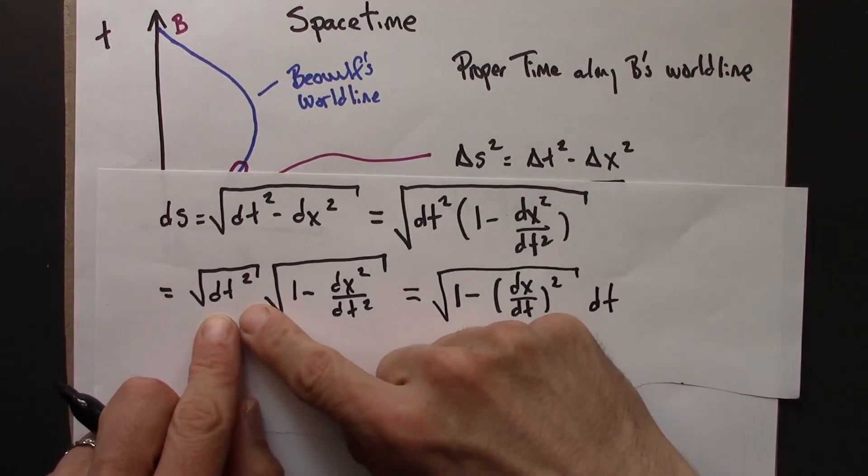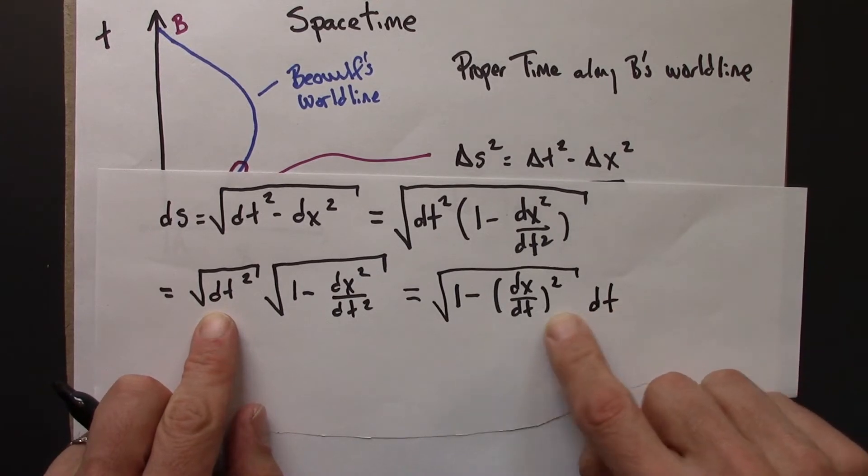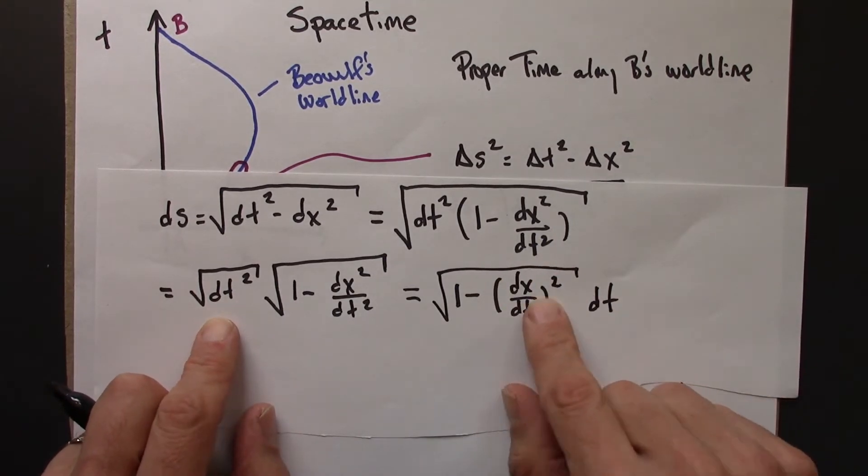I took this dt squared square root, rewrote it as dt, and then I put parentheses around the stuff that's getting squared here.